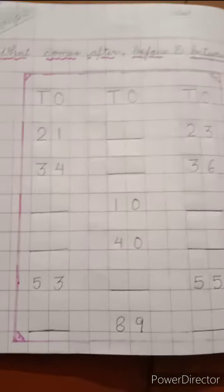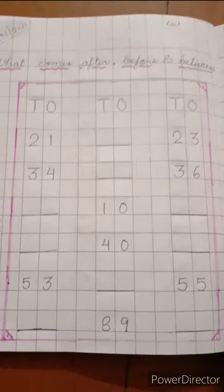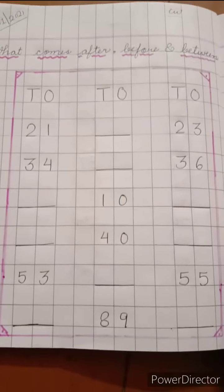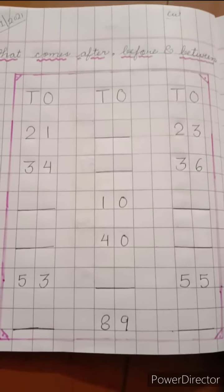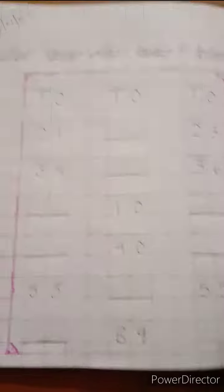So, let me start. Students, you can see I wrote some numbers on the notebook. So, what we do? We have to write what comes after, what comes before and what comes between in the blanks. Okay? So, let's start.